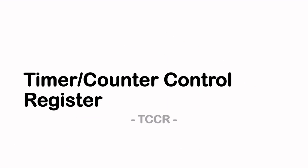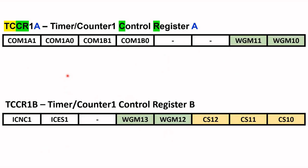The timer control register TCCR is made up of two 8-bit registers: TCCR1A and TCCR1B. Note that the function of the bits differs between registers. For example, bit 0 in TCCR1A is WGM10, but in TCCR1B, bit 0 is CS10.